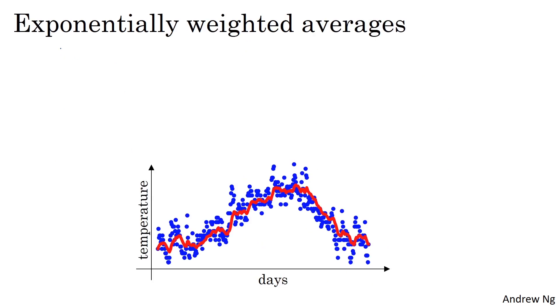So let's look at the equation we had from the previous slide. It was Vt equals, previously we had 0.9, we're going to turn that into parameter beta. Beta times Vt minus 1 plus, and previously we had 0.1, but we turned that into 1 minus beta times theta t. So previously we had beta equals 0.9.